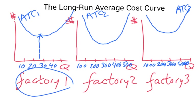So for factory two, a pretty good quantity to produce looks like right around 300 or so. For factory three, maybe right around 3,000.